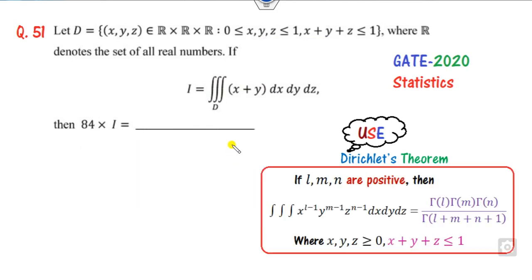What is Dirichlet's theorem? Whenever there is a triple integration over the domain, there is a major requirement. The sum of them must be less than 1, which is given to you.